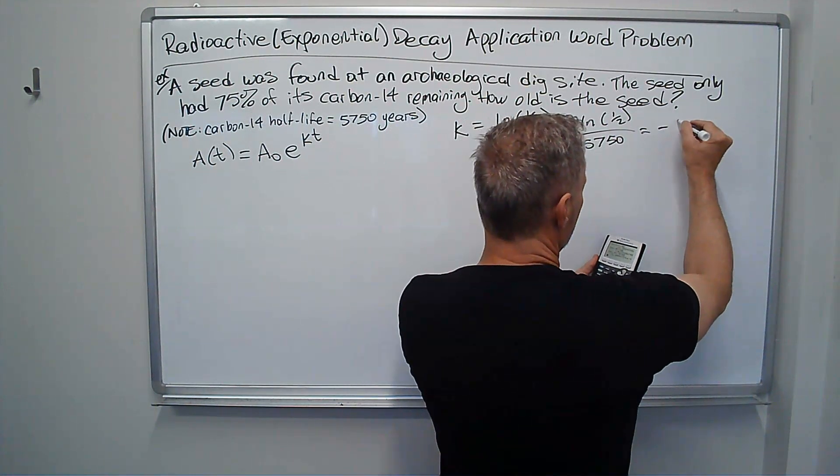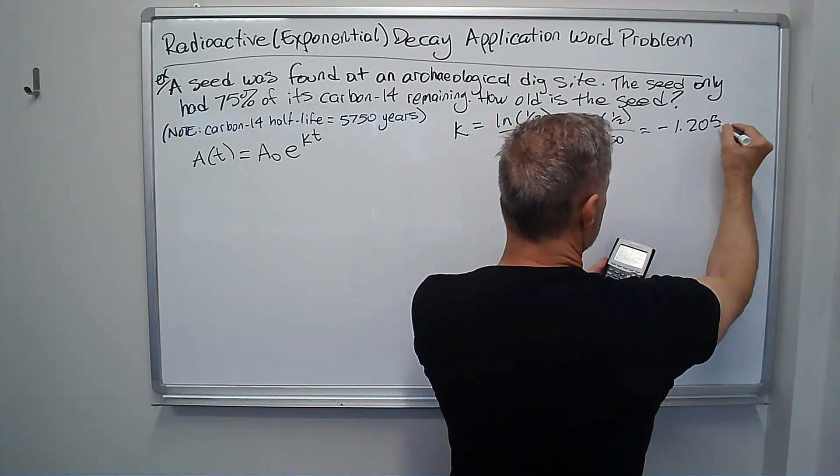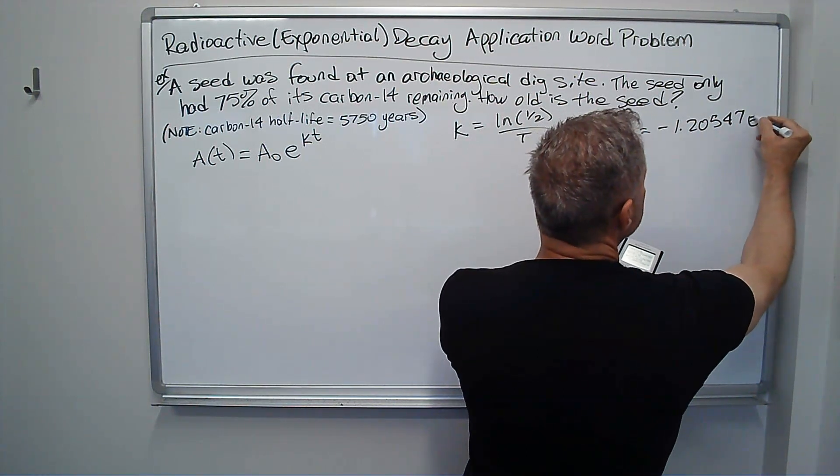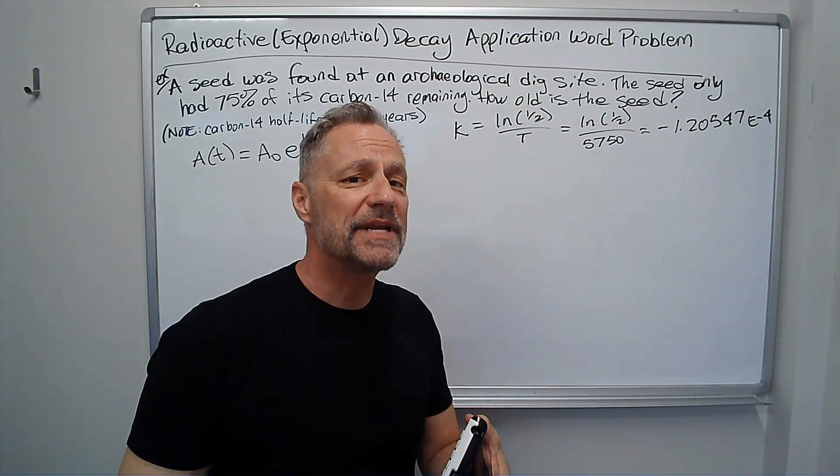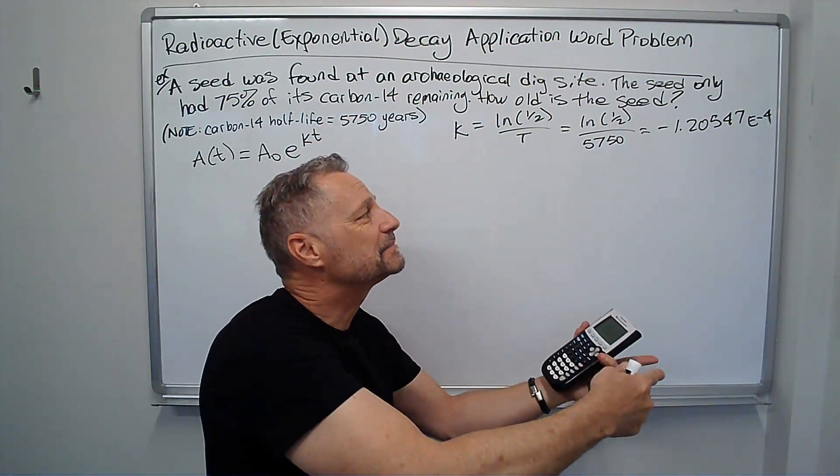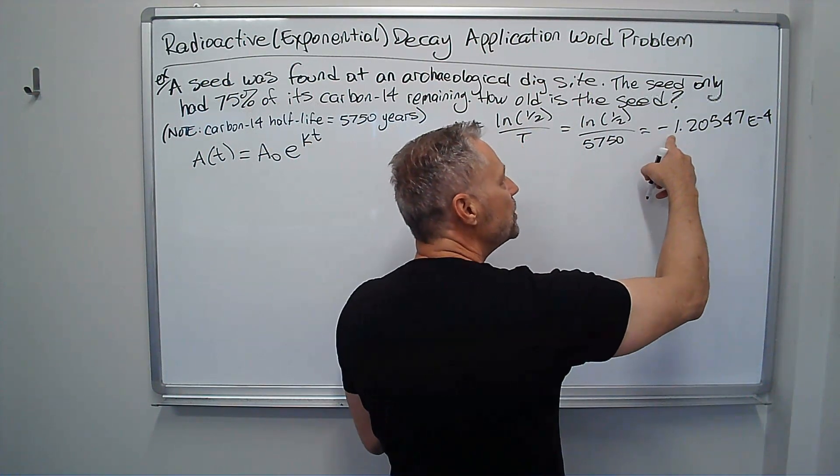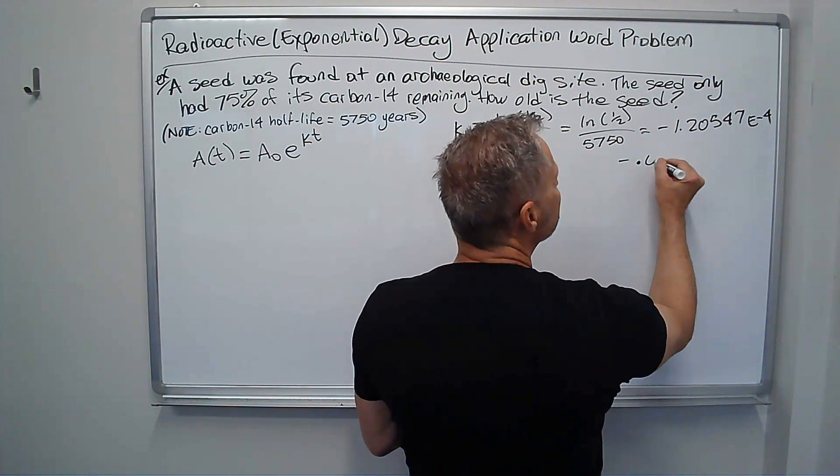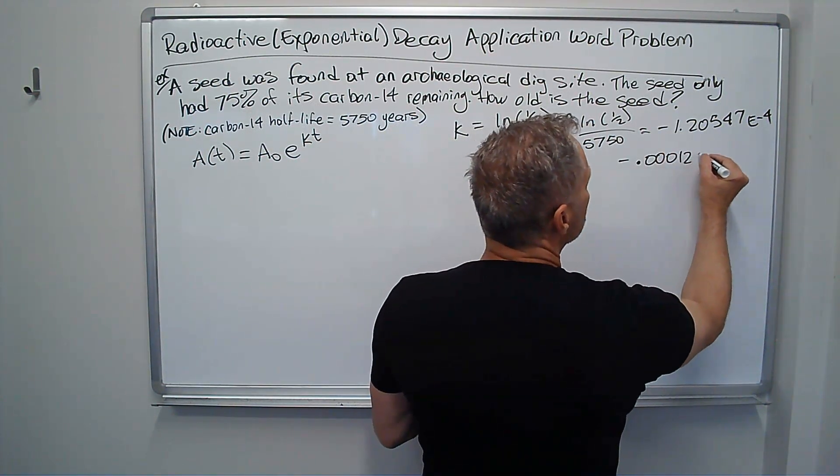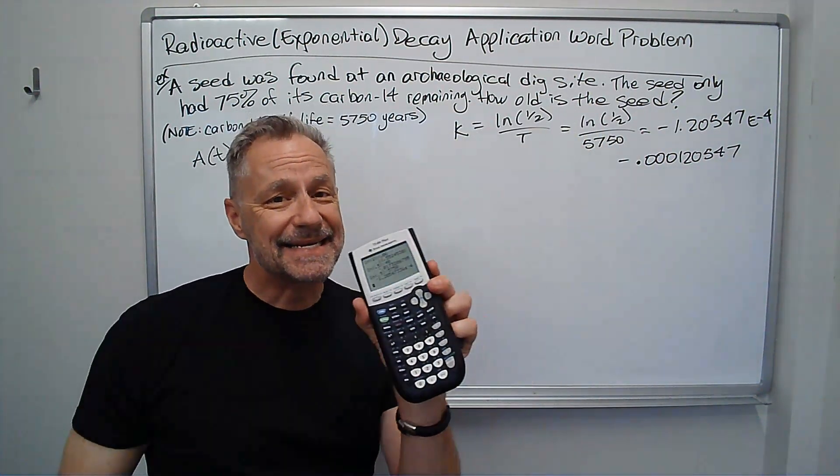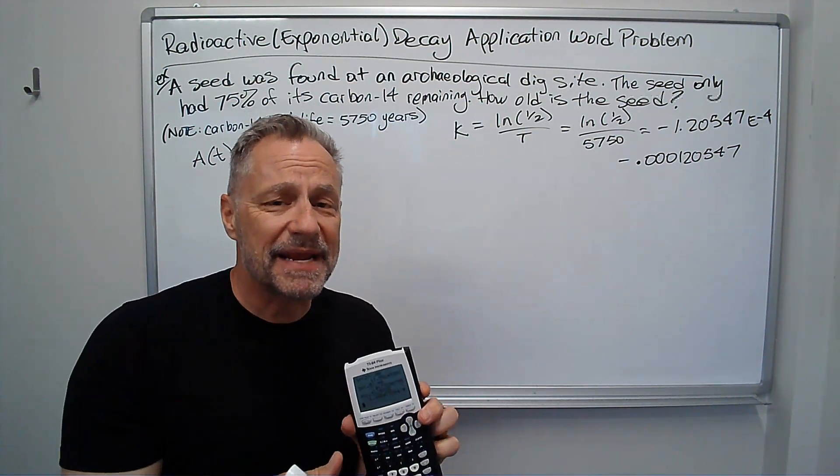Now, in my calculator, it looks like this. It says negative 1.20547. There's some other numbers, but it goes e negative 4, which means it put it in scientific notation, meaning I need to move the decimal four places to the left. So it's really moved one place and then three more. It's negative 0.00012047.